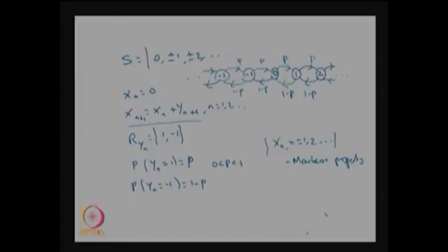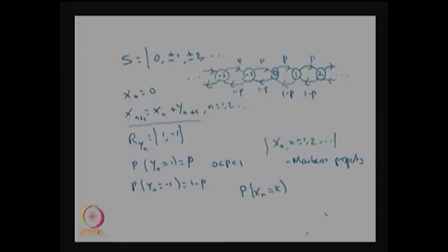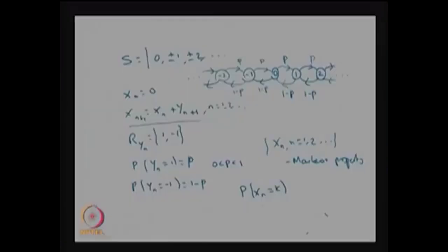Once the Markov property is satisfied, using the Chapman-Kolmogorov equation we can find the distribution of xn taking value k. This involves finding the n-step transition probability, which is an element of p^n. From the one step transition probability matrix we compute p, p squared, p cubed, and so on up to p^n. Since the state space is countably infinite and p is unknown, the computational aspects of finding the distribution are not discussed here.